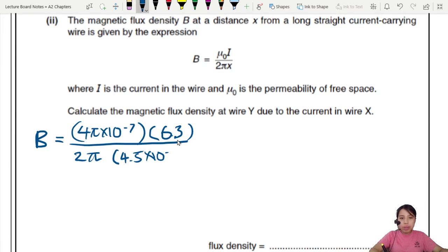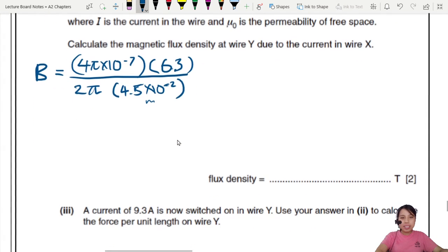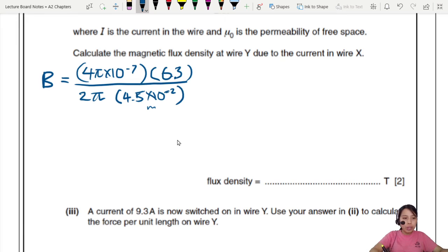You want to find magnetic flux density. So mu naught is a constant, 4 pi times 10 negative 7. You can find this constant at the first page of every question paper or in your calculator. I current. What's the current flowing through this wire? 6.3 amps. Divided by 2 pi times X, the distance from the wire, which is 4.5 cm.